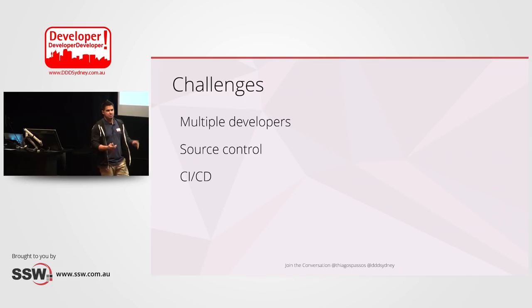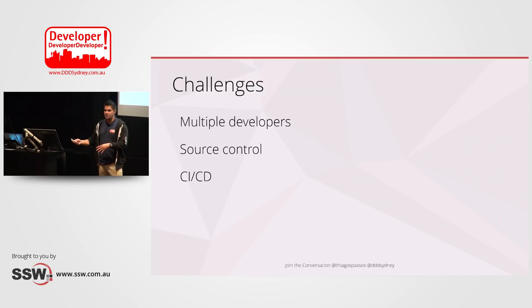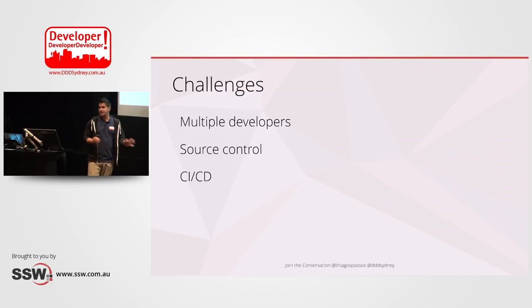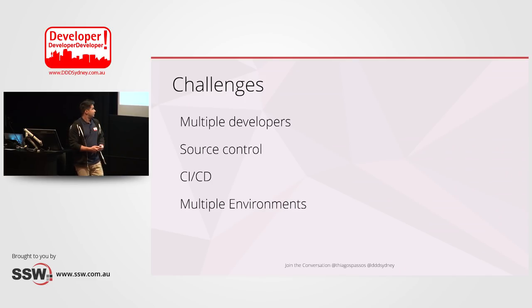CI and CD: for all projects at SSW, the first thing we do is build the CI/CD pipeline so we can deliver something — even a hello world — all the way to production straight away and deliver value to the client quickly. And of course multiple environments: you don't want to be stuck with a single environment — you want test, UAT, integration environments and so on.